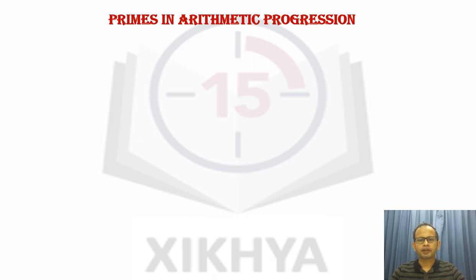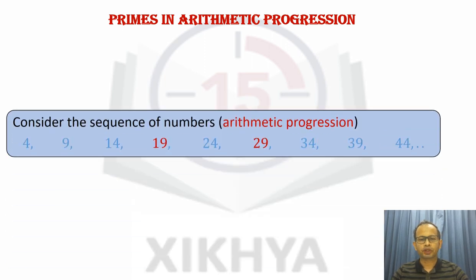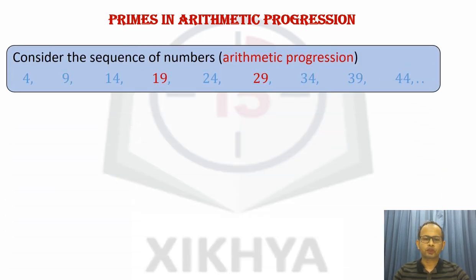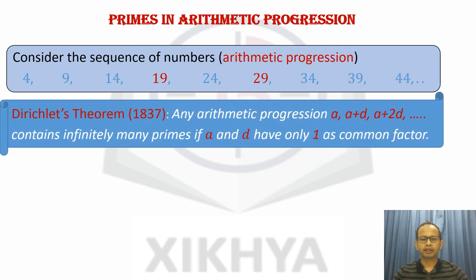Now I mentioned a very deep theorem about primes in arithmetic progression. What is an arithmetic progression? For example, this sequence of numbers 4, 9, 14, 19, etc. You can see that each term is 5 more than the previous term. Such a sequence is known as arithmetic progression. And you can see that these red colored numbers are prime numbers. And the natural question that arises is whether there are infinitely many such prime numbers in this progression or similar progressions. And it was Dirichlet who gave an affirmative answer to this question.